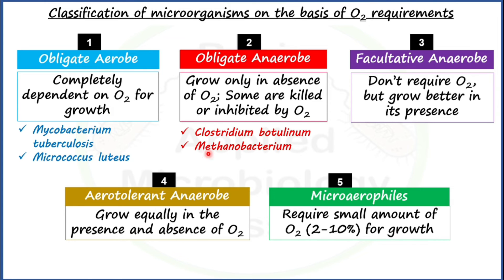For obligate anaerobs, Clostridium is one of the best examples. Clostridium botulinum causes botulism, Clostridium tetani causes tetanus, and Clostridium perfringens causes gas gangrene. All Clostridium species are obligate anaerobs. Another example is Methanobacterium, a genus from the methanogens — archaea known as extremophiles — which are also obligate anaerobs.